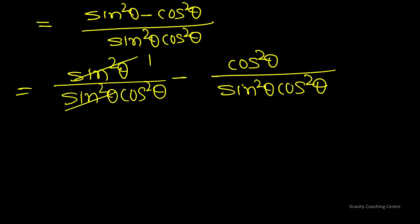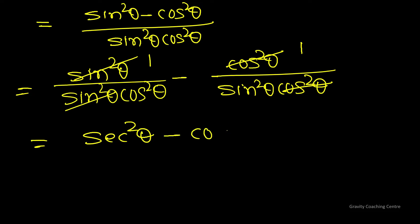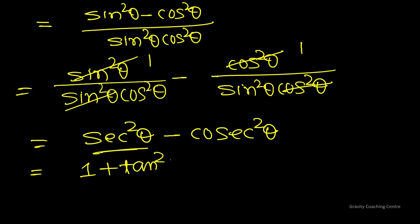Cancelling sin²θ · cos θ terms: cos²θ/cos²θ gives 1/cos²θ which is sec²θ, and 1/sin²θ is cosec²θ. So we get sec²θ minus cosec²θ. We know sec²θ = 1 + tan²θ and cosec²θ = 1 + cot²θ.